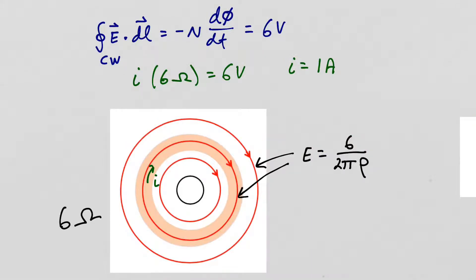In example 2, we placed a conducting ring around the solenoid with a total resistance of 6 ohms. With the solenoid producing an electromotive force of 6 volts, the result was 1 amp of current flowing around the conducting ring.